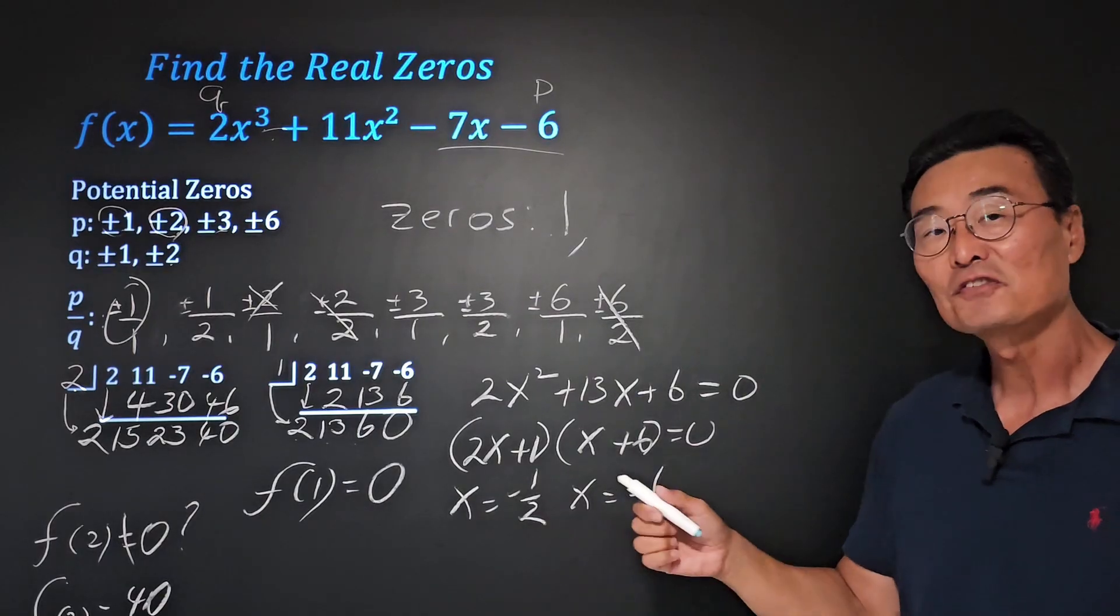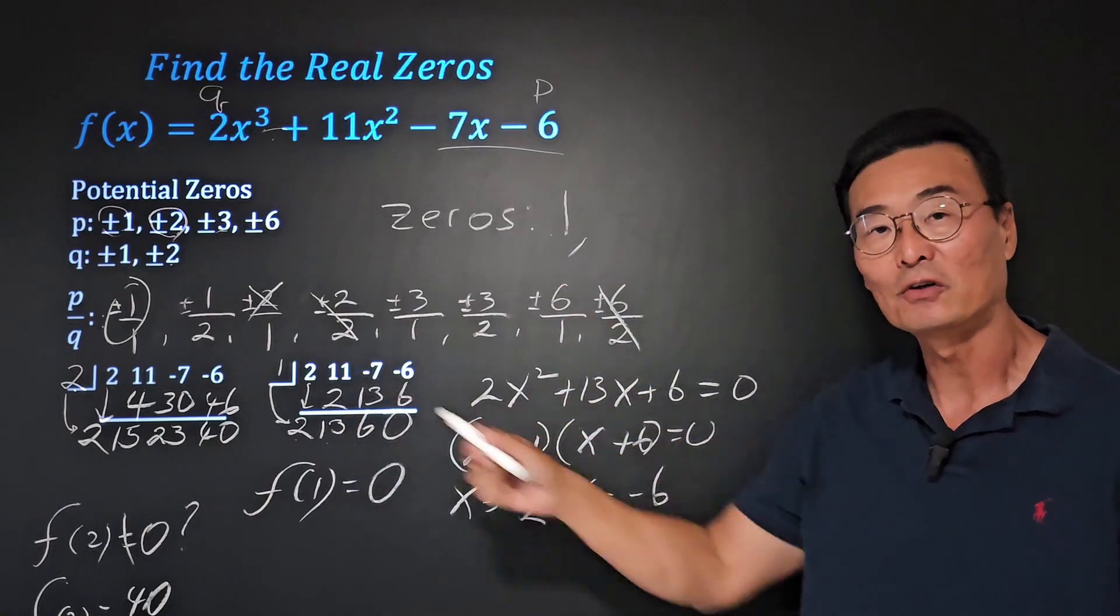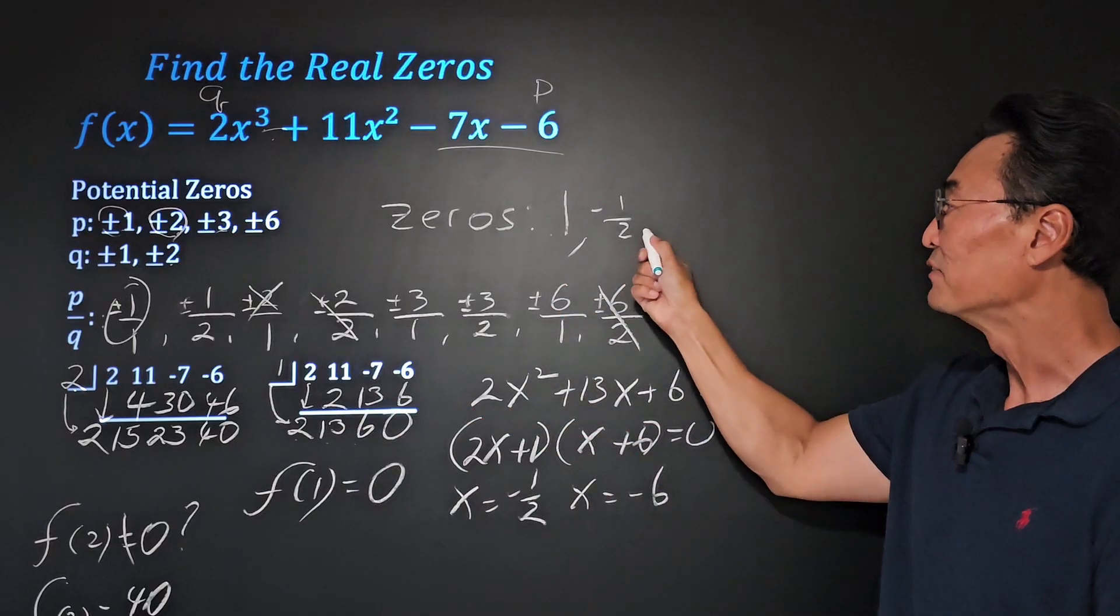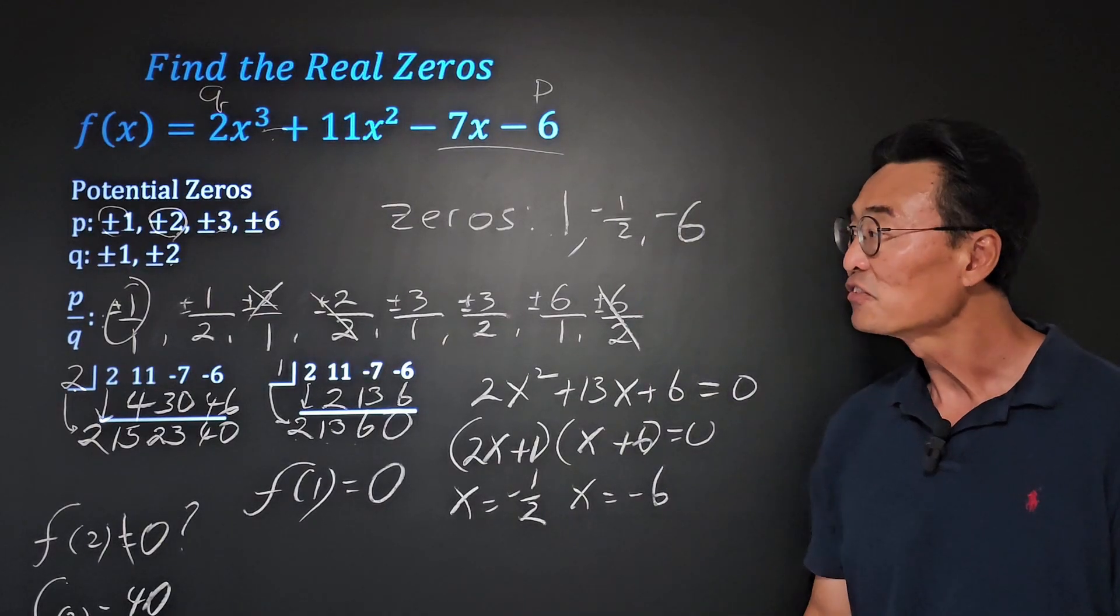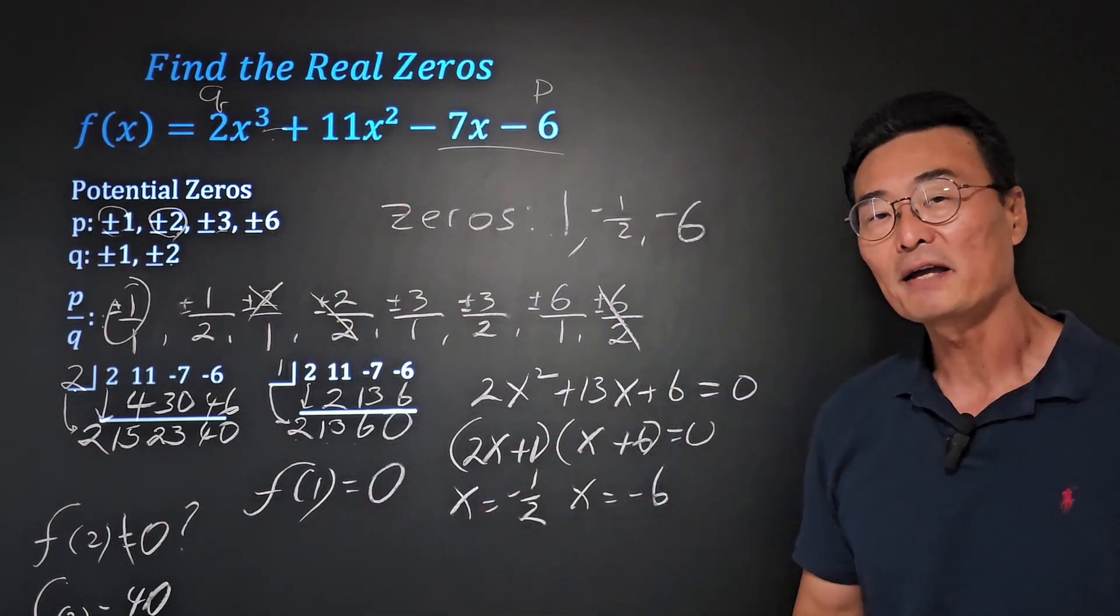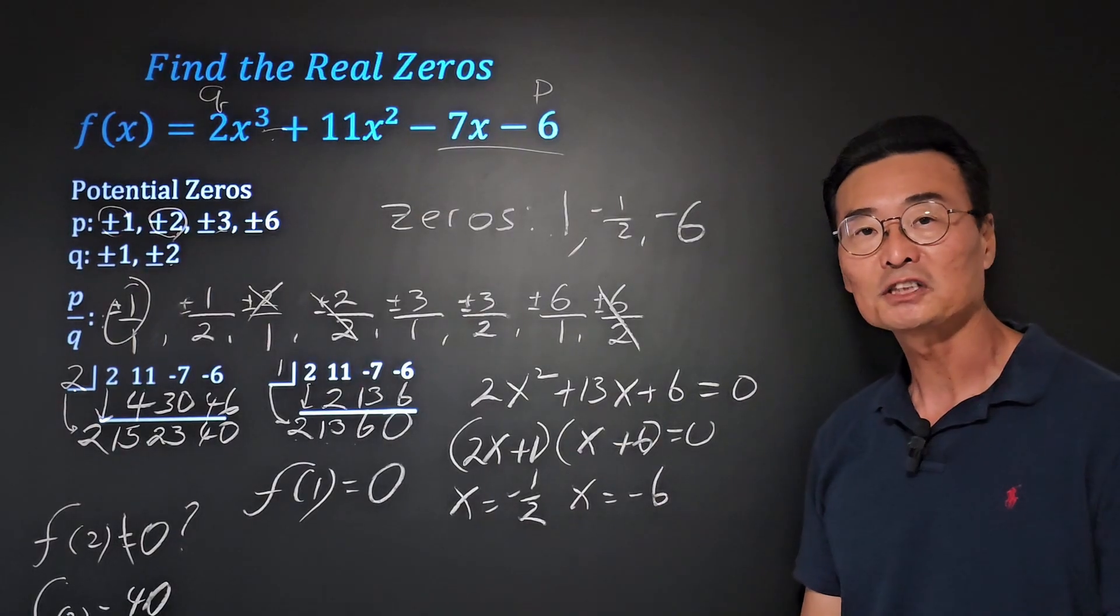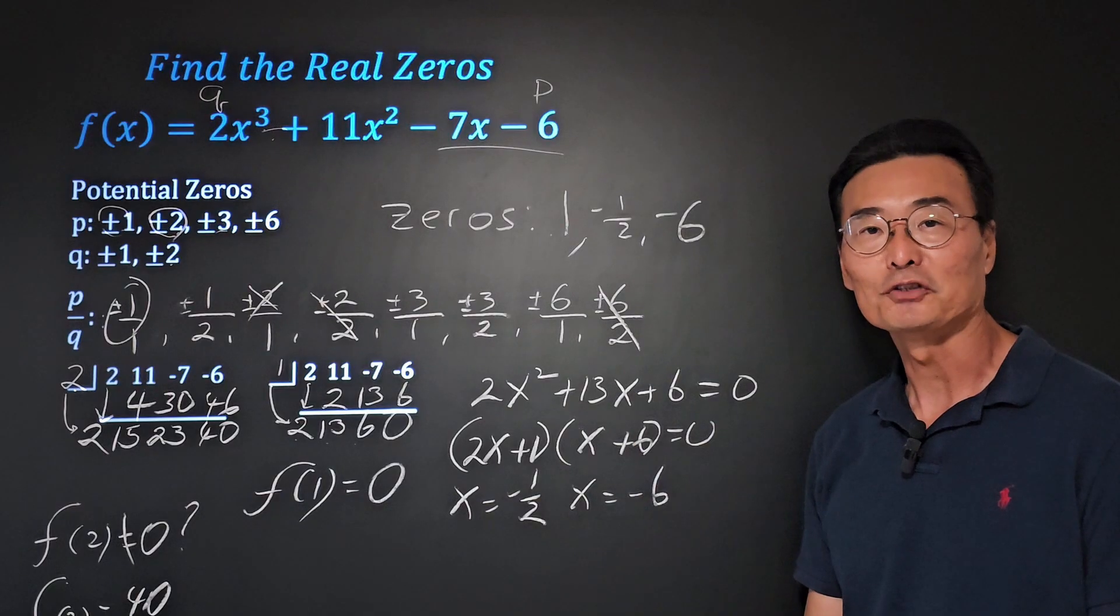Therefore, all the zeros of this polynomial function are going to be 1 that we found earlier, and we also have negative 1 half and negative 6. So this method will work whether the degree is 3, 4, 5, any polynomial function, and it has real zeros, and this method can be used.